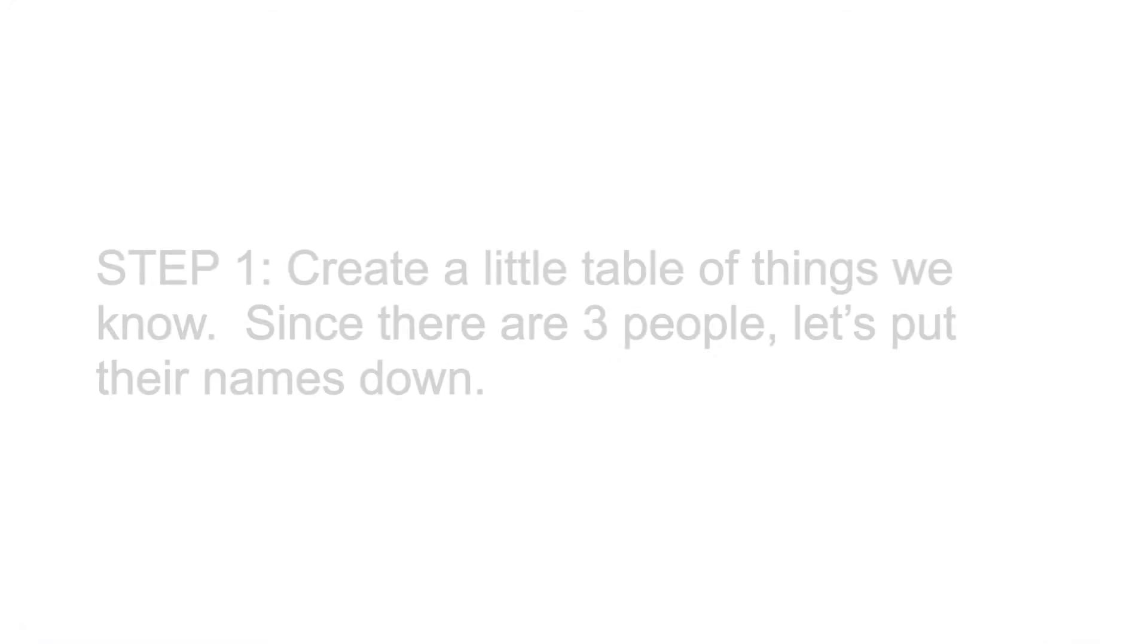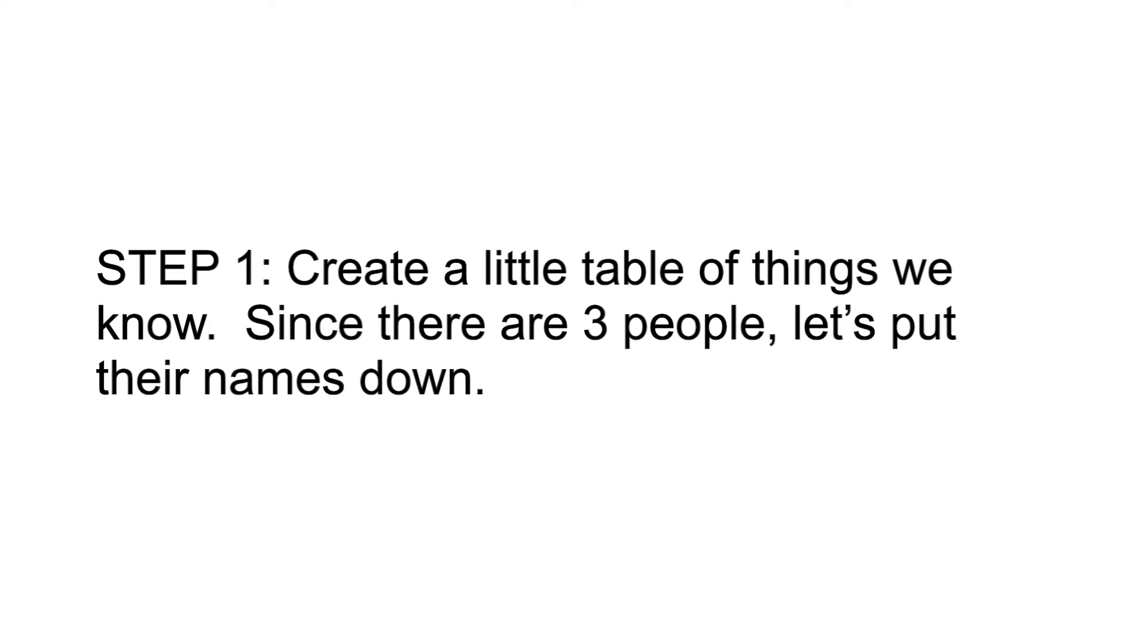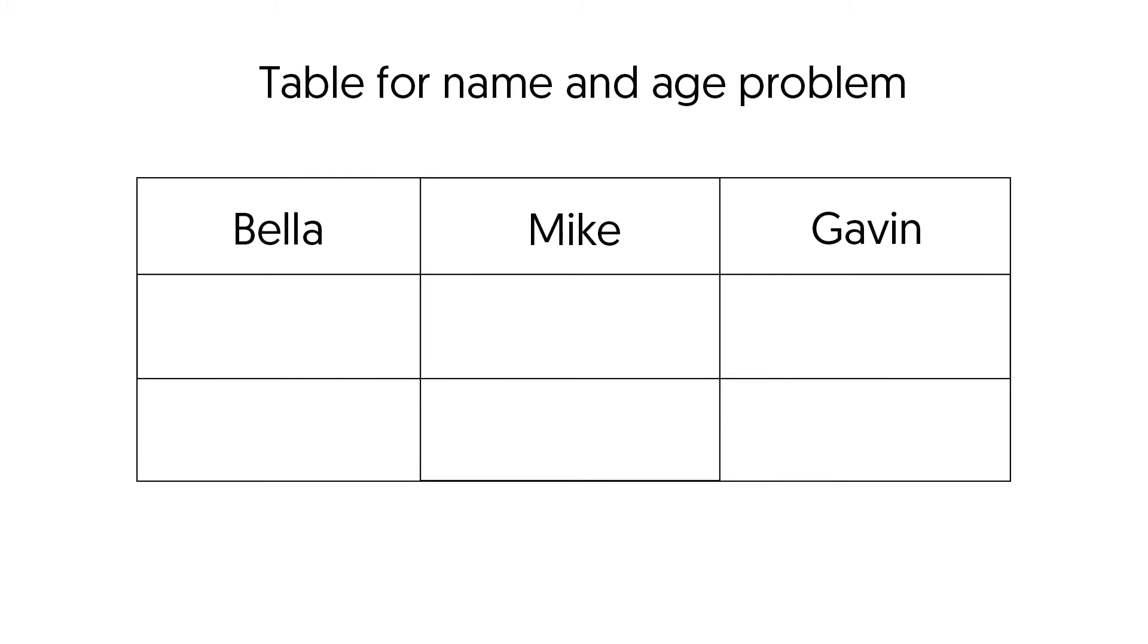Okay, so we need to sort through these names and ages before we get confused. Let's take three steps to do that. Step one, create a little table of things we know. Since there are three people, let's put down their names: Bella, Mike, Gavin.